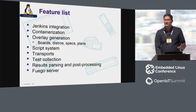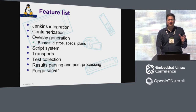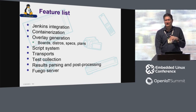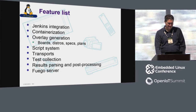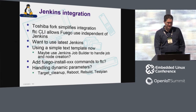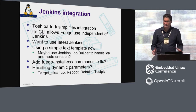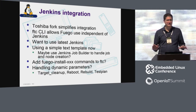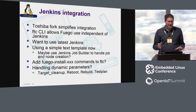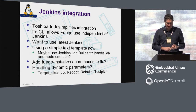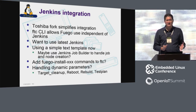I'm going to go over the feature list, kind of where we are with different things, what we've got prototyped, covering the major feature areas. On Jenkins integration: the Toshiba fork simplifies the integration greatly, and I think we should just adopt that. We are going to lose some things in that though — we're going to lose the dynamic parameters. I don't know if that's a big deal or not.